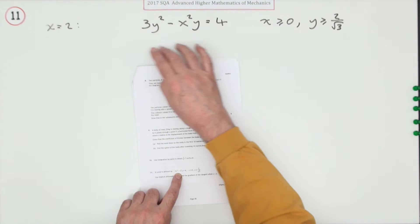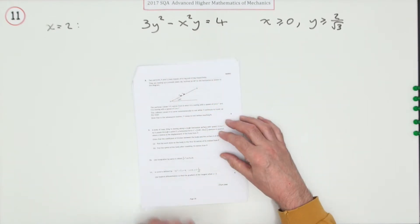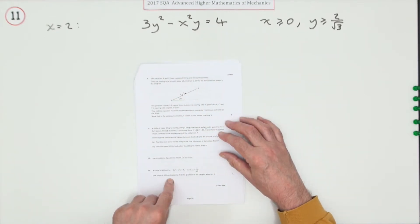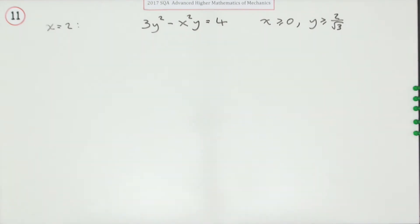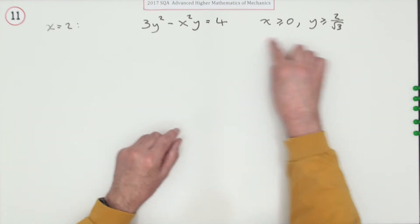A curve is defined by this implicit equation, which we can't write explicitly as y equals some function of x. Use implicit differentiation to find the gradient of the tangent when x is 2. We have these usual disclaimers here, which can be useful in selecting appropriate values.